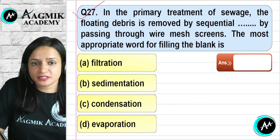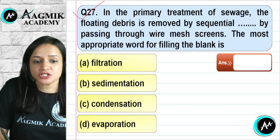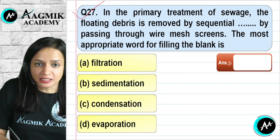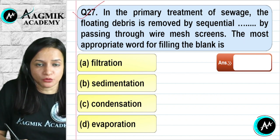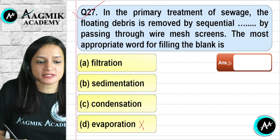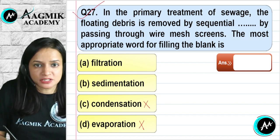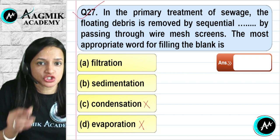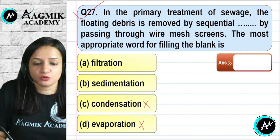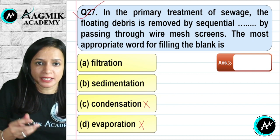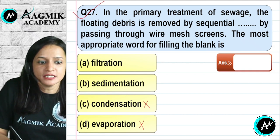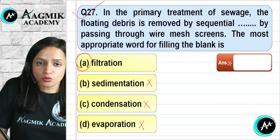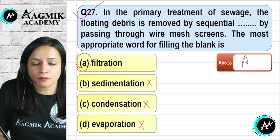Question number 27: In the primary treatment of sewage, the floating debris is removed by passing through a wire mesh screen. This process is best described as filtration — like straining tea leaves. Sedimentation is where heavy things settle down, which is different. Condensation and evaporation involve water molecules and are not relevant. The most appropriate term is filtration. The correct option is A.